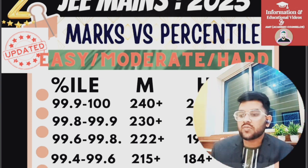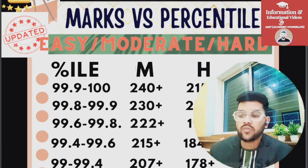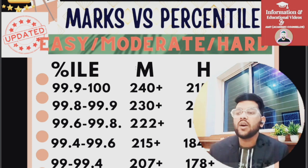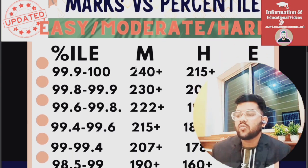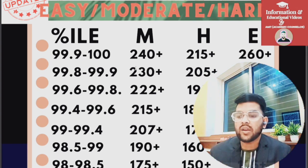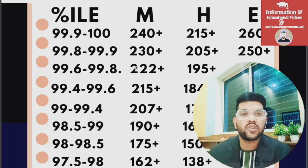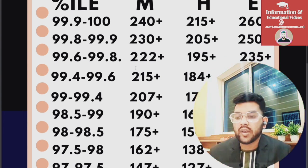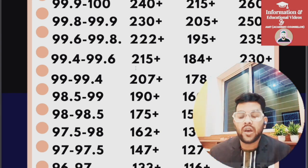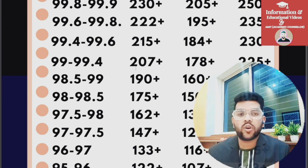Continuing the data — for 99 percentile: moderate 207 plus, hard 178 plus, easy 225 plus. For 98.5: hard 160, easy 209 plus. For 98: hard 150, easy 195 plus. For 97.5: hard 138, easy 178 plus. For 97: hard 127, easy 168.